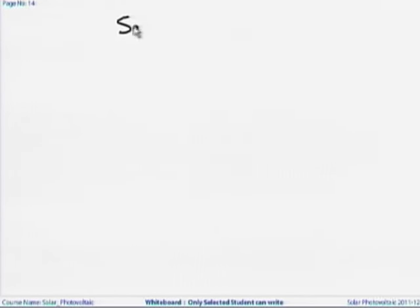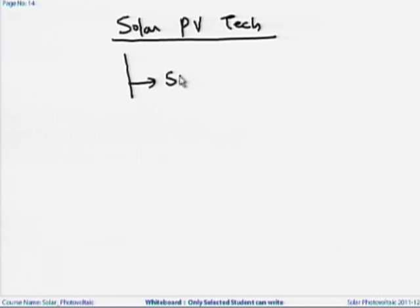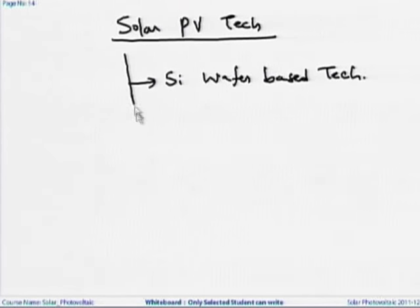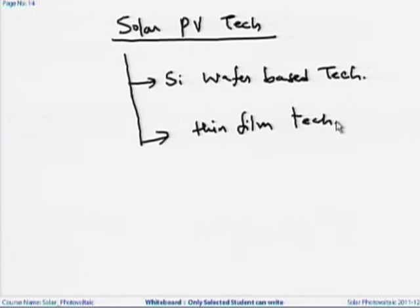In today's lecture, we will see the thin film technology. If you look at solar cell technology, you can divide solar PV technology into two groups: one is silicon wafer based technology and the other is thin film technology. Whatever we have seen so far is silicon wafer based. Thin film technology is also an important aspect of PV technology, and we are trying to reduce the cost.